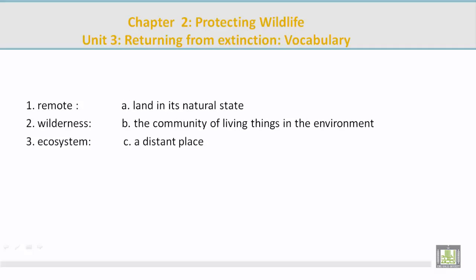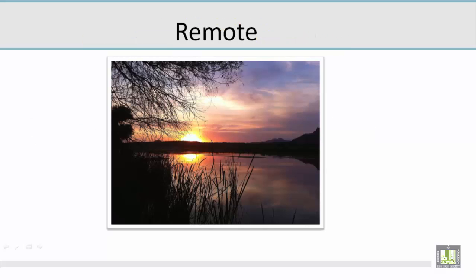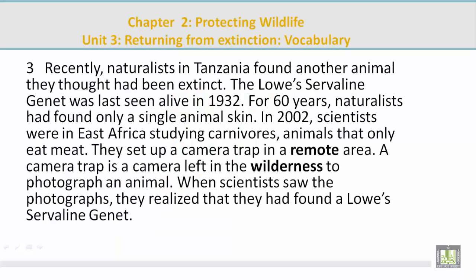Choose the correct meaning on the right. Number 1: remote. Mohamed, please give us the correct answer. The answer is C — a distant place. Now let's take a look at a picture displaying the vocabulary word 'remote.' Mohamed describes the picture: he sees a lake, clean water, and it looks like no one has touched it. He confirms that 'remote' means a distant place, far away from people. The paragraph reference is: 'They set up a camera trap in a remote area' — the wilderness is a distant place, which is what remote means.